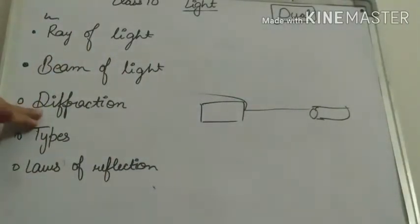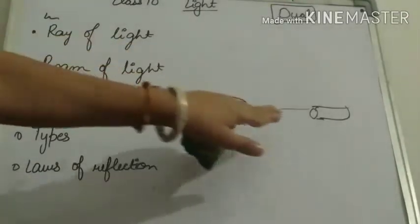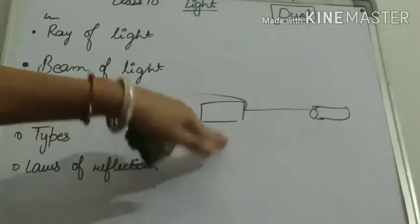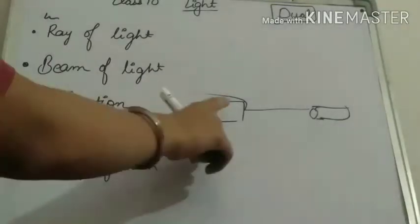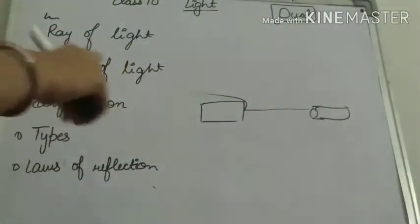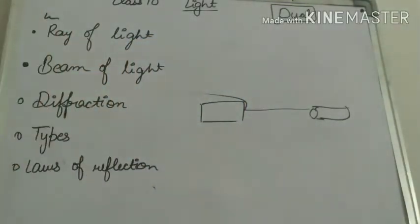Diffraction is the process in which light comes from a source to an unsmooth rough surface and bends from the corner of that surface. This is diffraction.